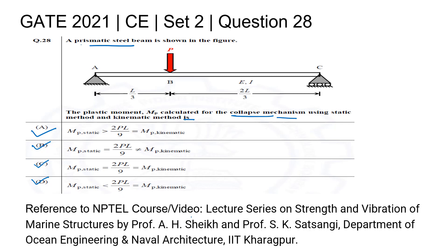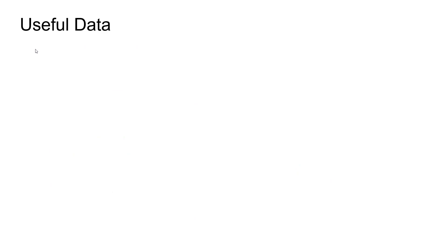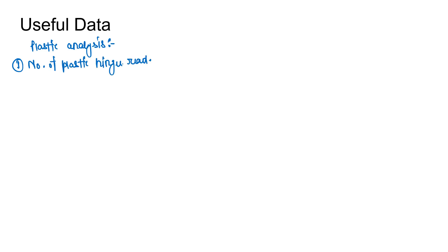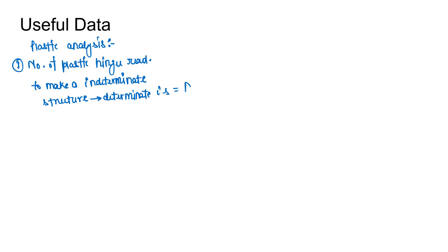Reference to the relevant NPTEL courses or video has been cited. Now coming to useful data: in plastic analysis of any structure, the first point is the number of plastic hinges required to make an indeterminate structure determinate is the static determinacy ds, where ds = r minus s.